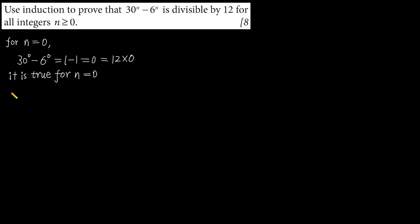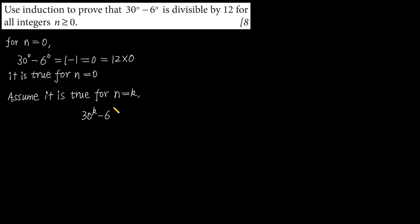Now assume it is true for n equals k. Then we have 30 to the power of k minus 6 to the power of k equals 12 multiplied by a, where a belongs to the integers.